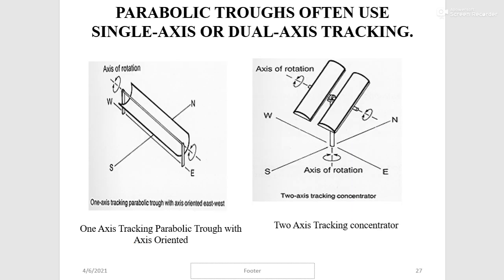Parabolic troughs often use single-axis or dual-axis tracking. This tracking is necessary because the sun changes its position throughout the day; without tracking, the parabolic trough cannot be pointed towards the sun all day, which would reduce the efficiency of the system.